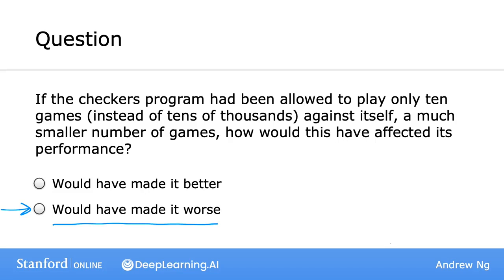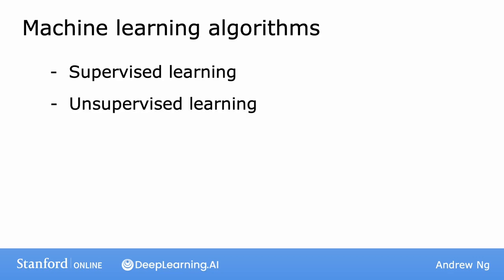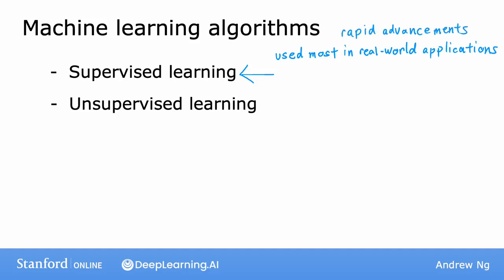Arthur Samuel's definition was a rather informal one, but in the next two videos we'll dive deeper into the major types of machine learning algorithms. In this class you'll learn about many different learning algorithms. The two main types are supervised learning and unsupervised learning. Of these two, supervised learning is the type used most in real-world applications and has seen the most rapid advancement and innovation.